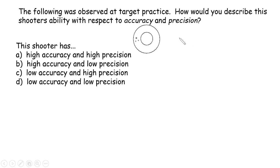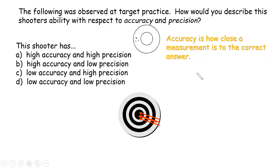Now let's recall what accuracy is. Accuracy is how close a measurement is to the correct answer. For example, you see here for shooting, target shooting,